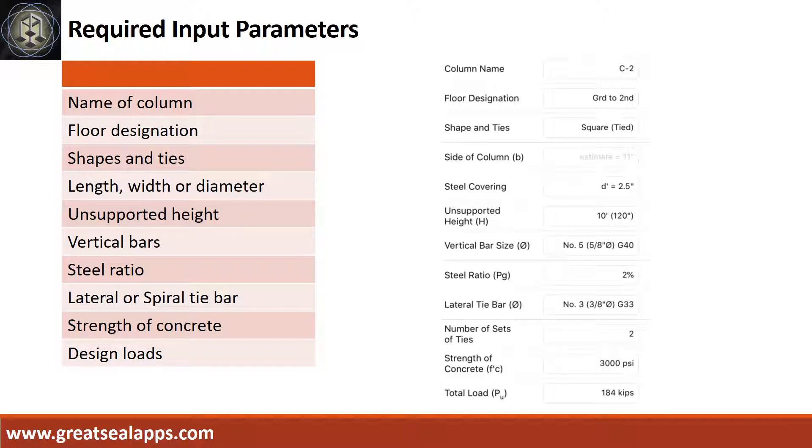Enumerate input parameters required. Column name: C2. Floor designation: Ground to Second. Shapes and ties: Square tied. Unsupported height: 10 feet. Vertical bars: 5/8-inch diameter at grade 40.